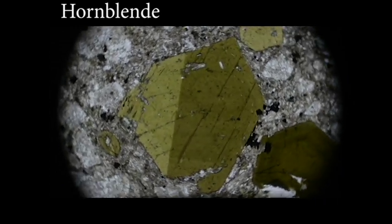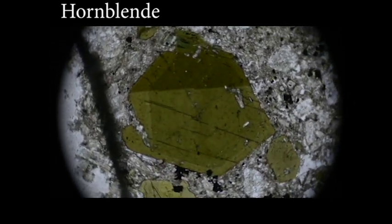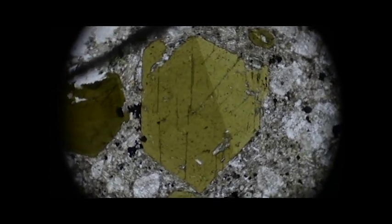Here we see another example. This is hornblende. It's green. It's twinned, but that's not important. But you notice that it changes from light green to dark green. So hornblende is light green to dark green pleochroic.